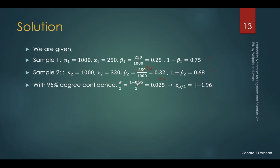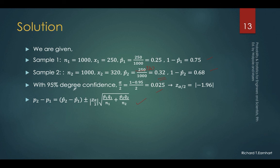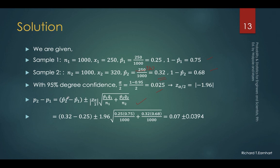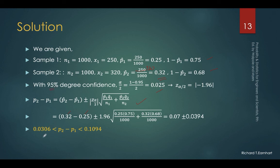With 95% degree confidence, alpha over 2 is 0.025, which corresponds to z = 1.96 from the Z table. Using the formula for estimating the difference between two proportions, P2 = 0.32, P1 = 0.25, Q1 and Q2 are their complements, and n1 = n2 = 1,000. We are 95% confident that the difference between the two population proportions will fall between 0.0306 and 0.1094.